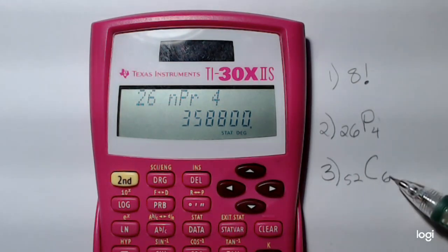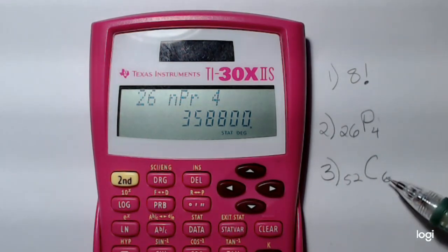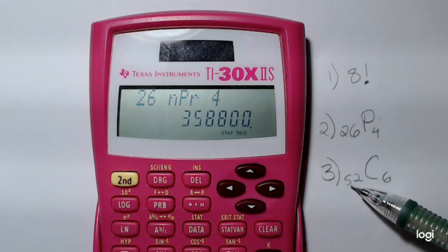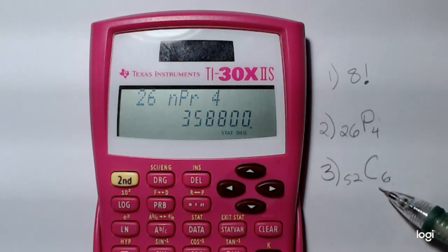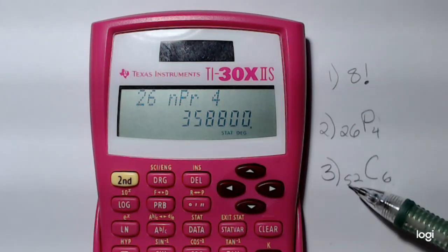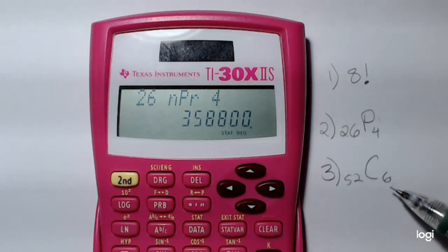Last example, let's take a look at this combination. I've got 52 objects, and I would like to choose 6. So 52 choose 6. An example of this would be something like if you have a lotto of 52 numbers, and you need to select 6 of those.